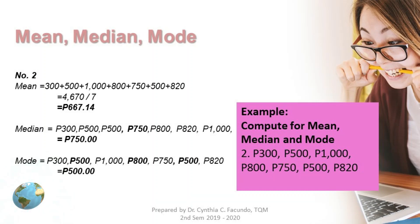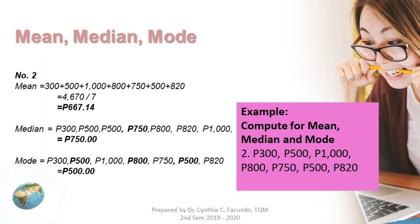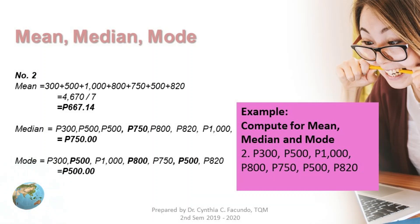For the median, arrange the values from lowest to highest: 300, 500, 500, 750, 800, 820, and 1,000. Since there are 7 numbers, the middle is number 4, which is 750 pesos — so the median is 750 pesos. For the mode, we have two 500s, so the mode is 500 pesos.